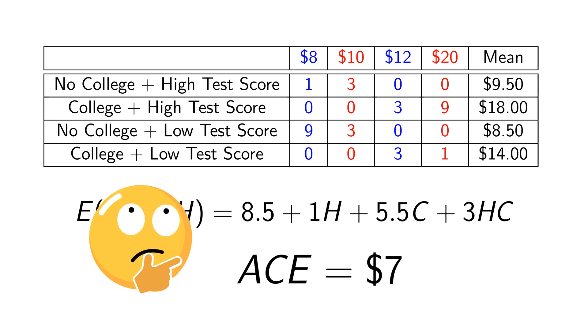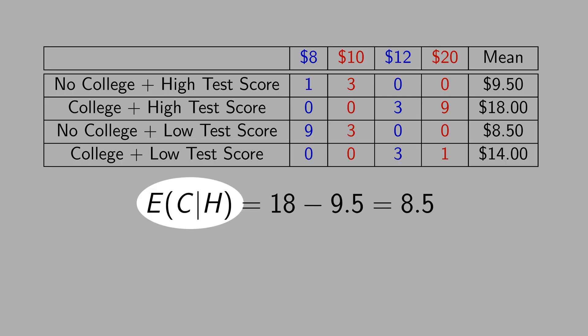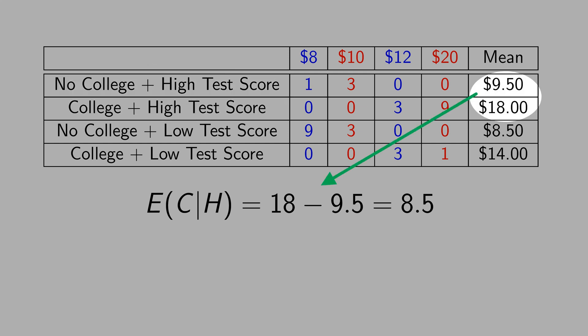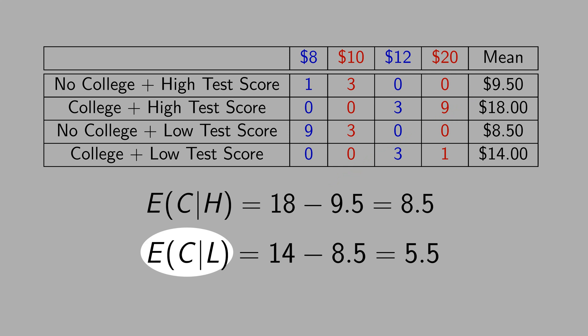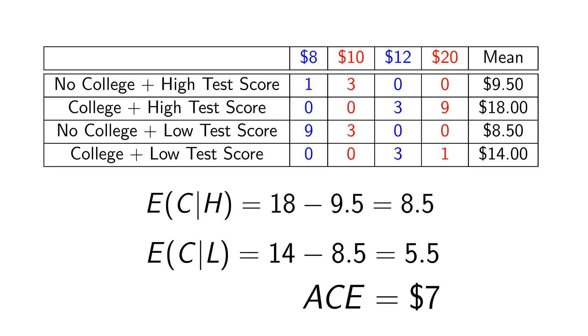Let's calculate the expected value of college conditional on a high test score. It is the difference between these two categories — you keep the high test score constant and take the difference between college and non-college. It is 18 minus 9.5. The impact of college degree for people with a high test score is 8.5. Now let's calculate the expected value of college for people with a low test score, applying the same reasoning: it is 14 minus 8.5, which is 5.5. If you average these two values, you get the average causal effect of college, which is $7.